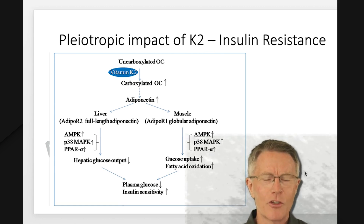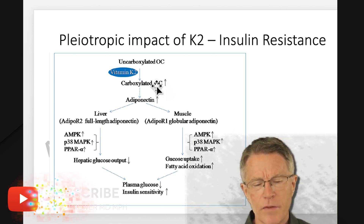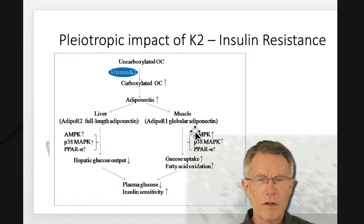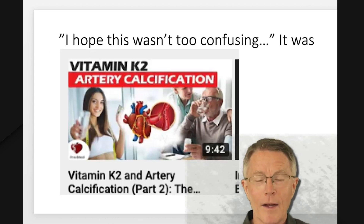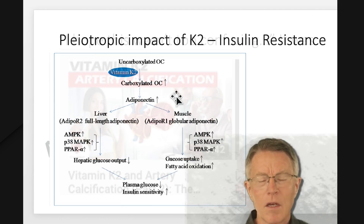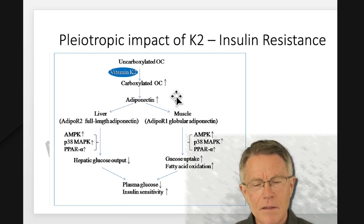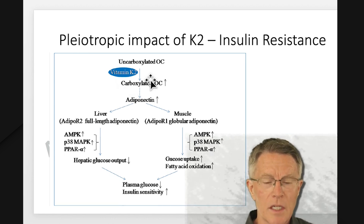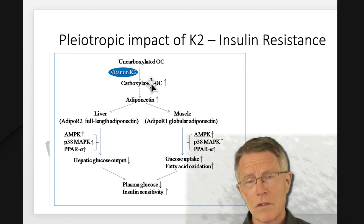Back to heart attack, stroke, and K2. What are some of the different mechanisms for K2? First of all, K2 carboxylates a couple of enzymes that are very important in several processes. One was MGP — matrix GLA protein — which I mentioned in that earlier presentation on artery calcification. The other enzyme that K2 carboxylates is osteocalcin. These enzymes have a lot to do with calcification of the bone and calcification of other tissue like plaque.